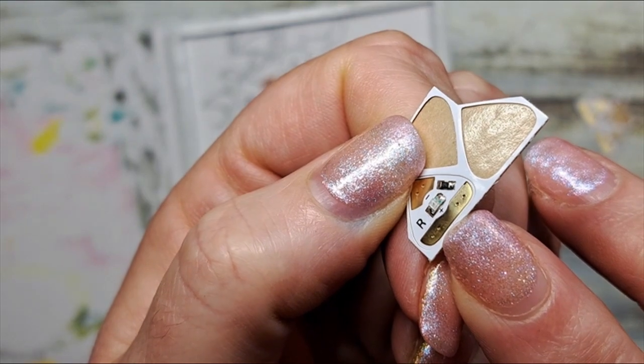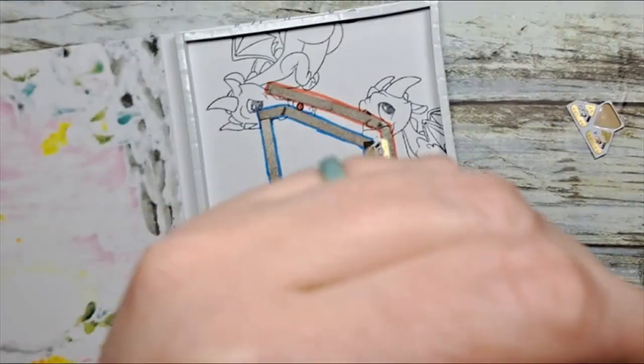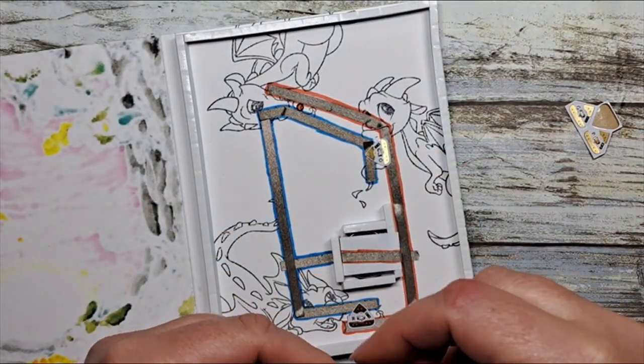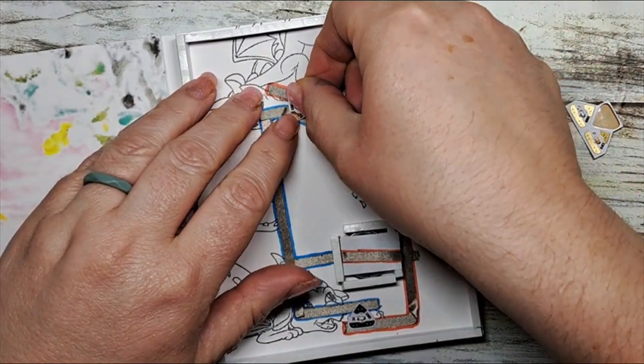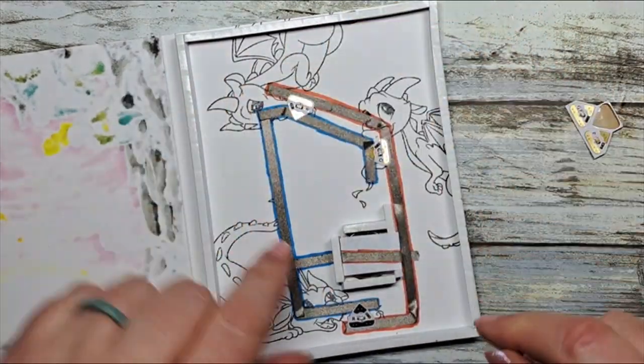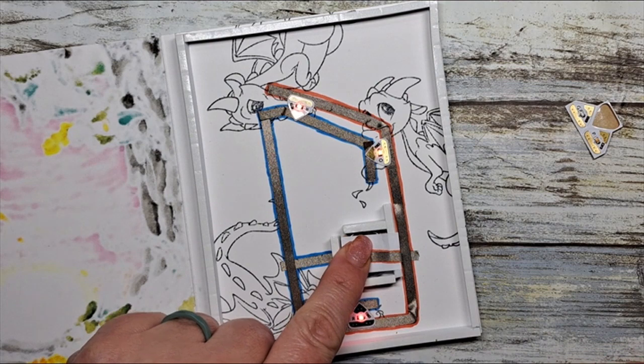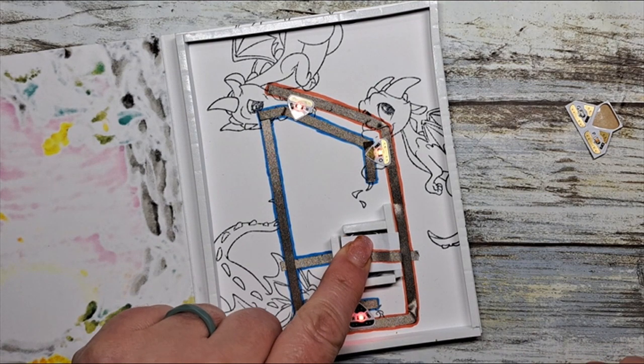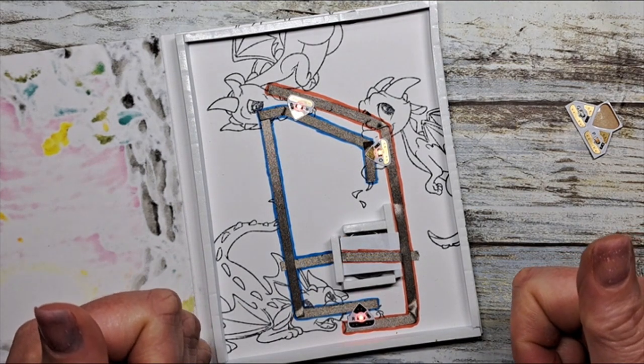There you can see the positive and the negative. One, two, three, we have a card ready to go. Always do a test. Awesome, three lights work, we're good to go. Now we can close the card.